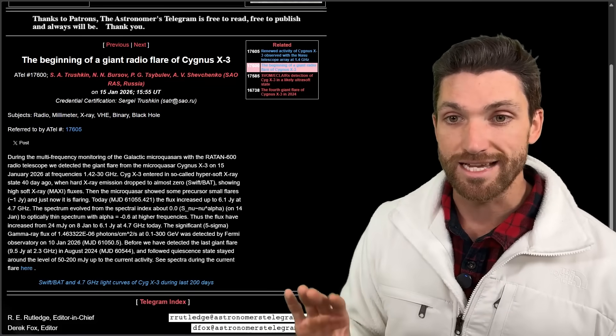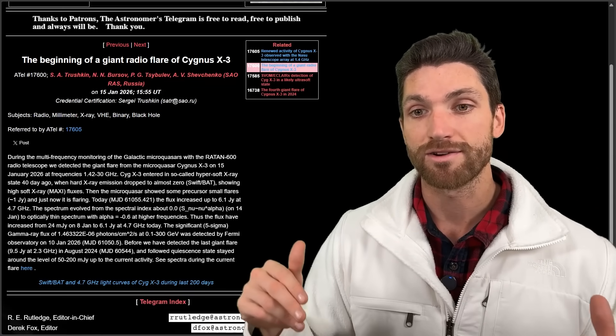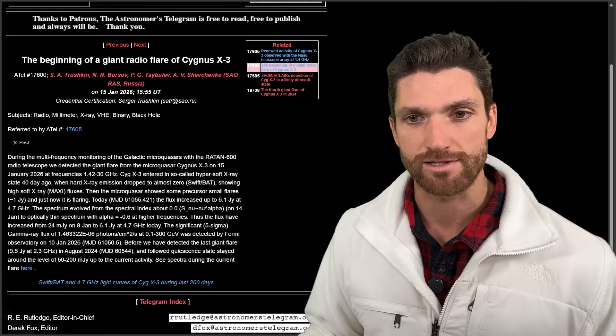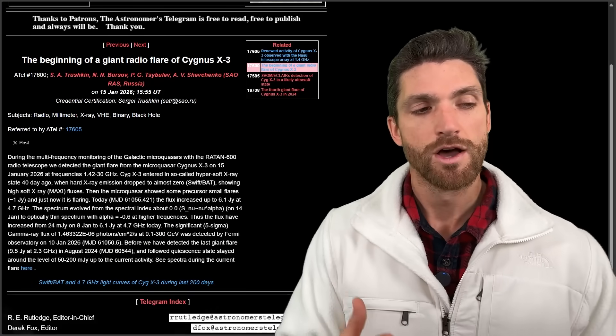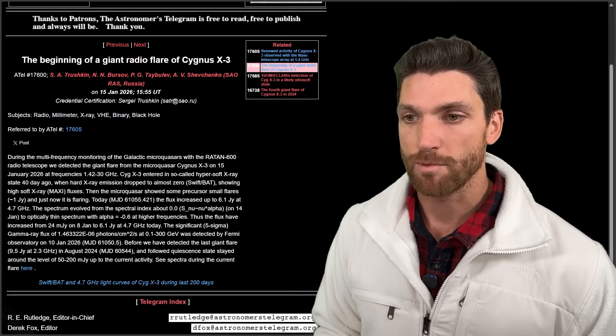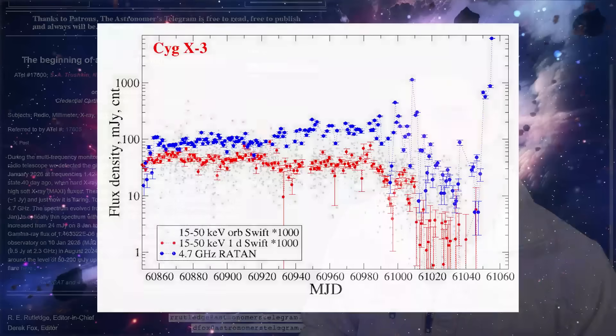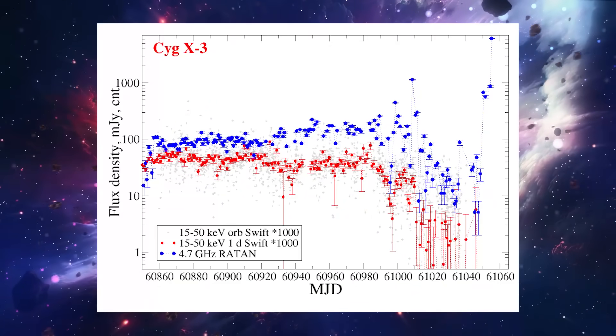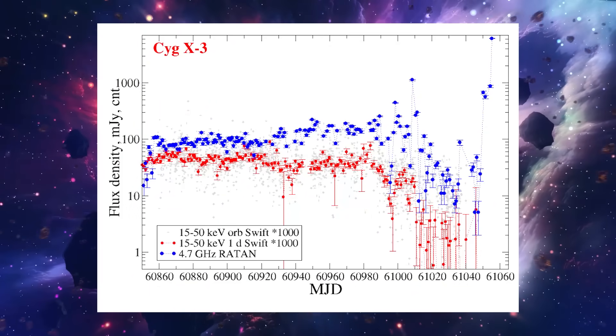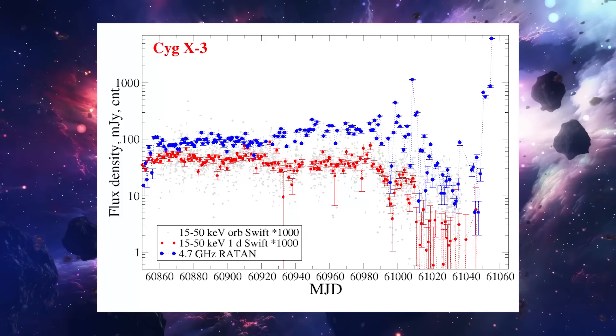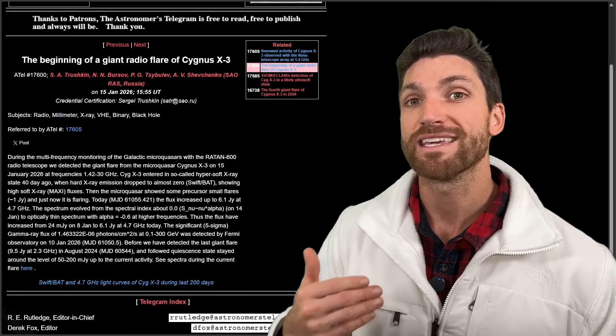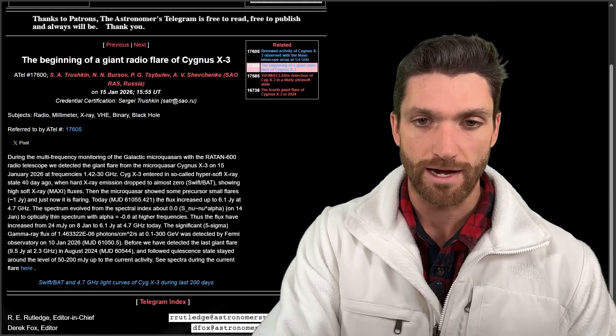These sort of frequencies are able to hit the earth and actually cut through the ionosphere and interact with us directly at the surface, though the strength matters. The strength of these signals is quite weak compared to what we're exposed to here on the surface because of lightning strikes or artificial man-made radiation. They picked up a pretty significant increase. The flux increased from about 24 milliJanskys all the way up to 6.1 Janskys at 4.7 gigahertz yesterday.